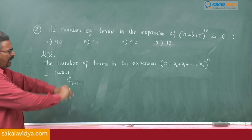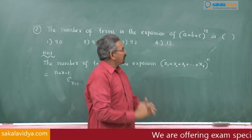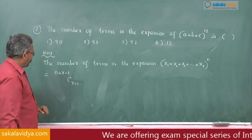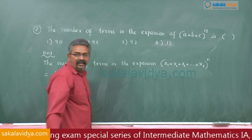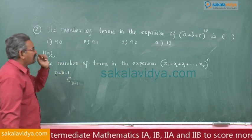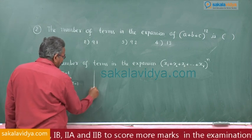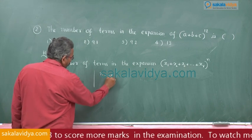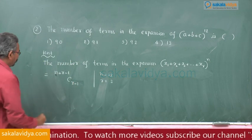It can be applicable to any problem. Now see the problem: what is n? 12. How many terms are there? 3 terms, that means r is equal to 3. That means here in this case n = 12 and r = 3, hence the problem can be solved.